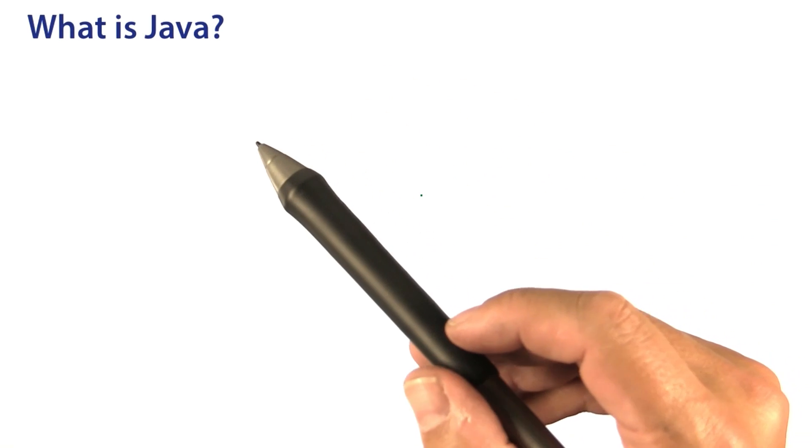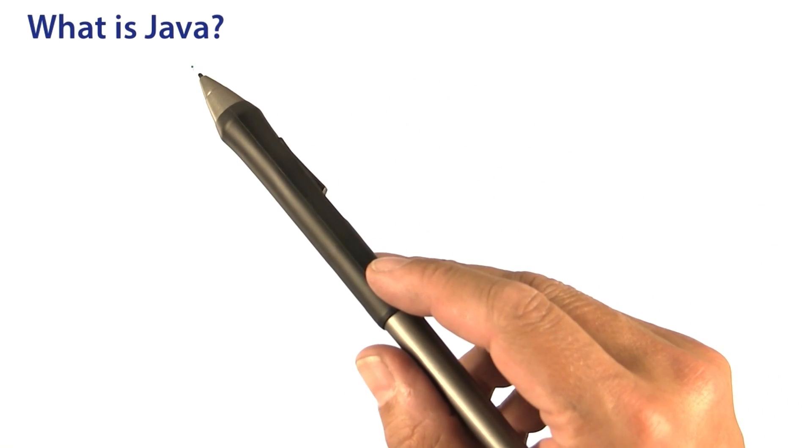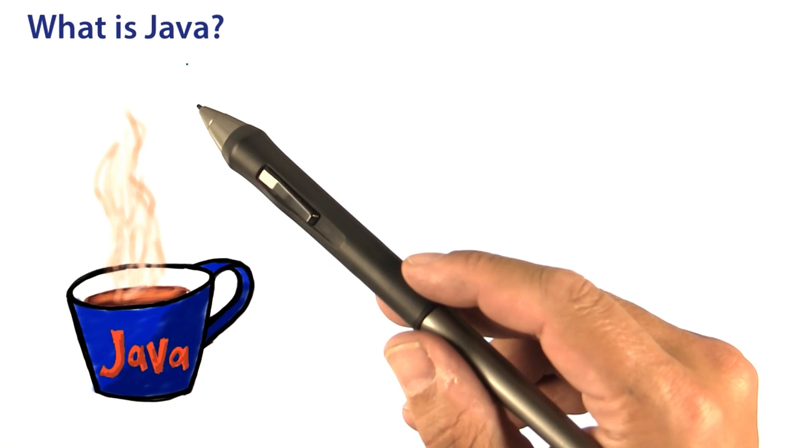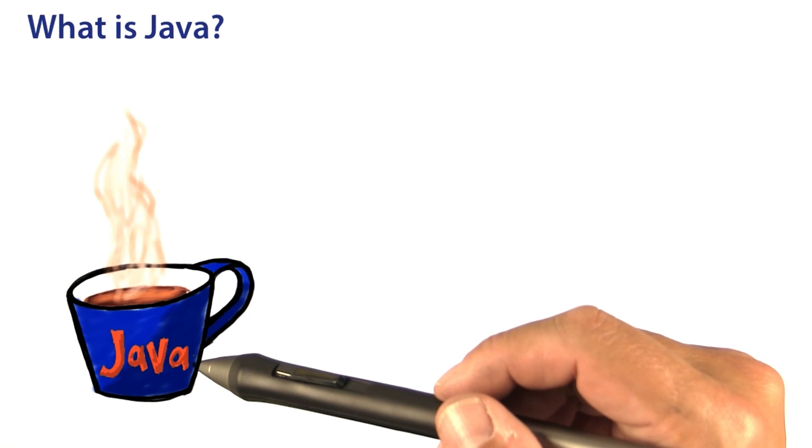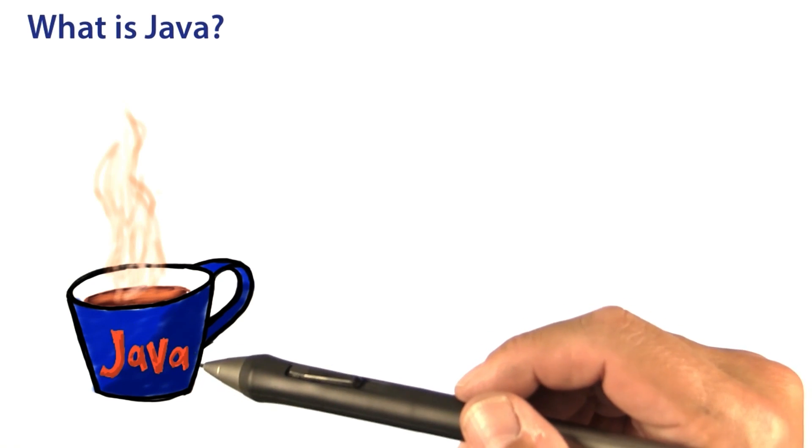The language that you will learn in order to talk to the computer is called Java. The name Java was chosen for fun. Many programmers drink lots of coffee, and some people call coffee Java, because on the island of Java, they grow coffee. Whatever.